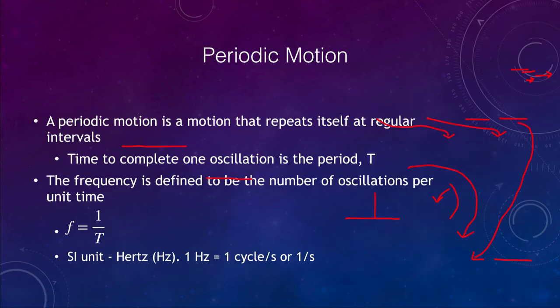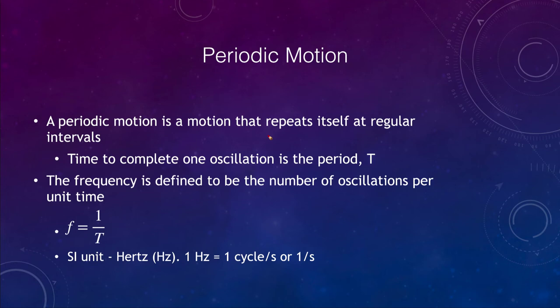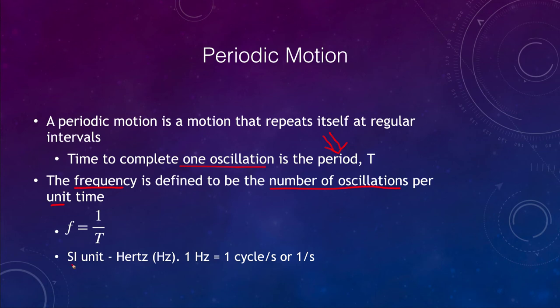The last topic in this lecture is periodic motion. Periodic motion, as you might expect, repeats itself — objects moving periodically go back and forth. For example, an object dangling from a spring bouncing up and down would continue indefinitely if you could ignore spring resistance and air resistance. The time to complete one oscillation is called the period, represented by capital T. The frequency is the number of oscillations per unit time — generally oscillations per second — with the SI unit being the hertz, where one hertz equals one cycle per second. Frequency and period are inversely related: frequency equals one divided by the period.